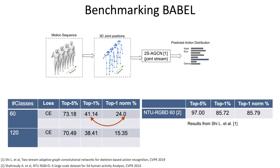The low class normalized accuracy suggests that the long-tail distribution of Babel makes the task challenging.